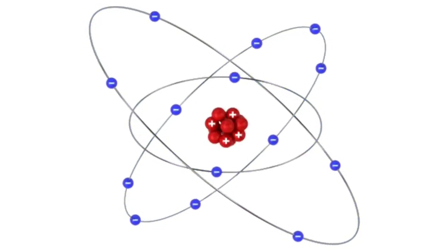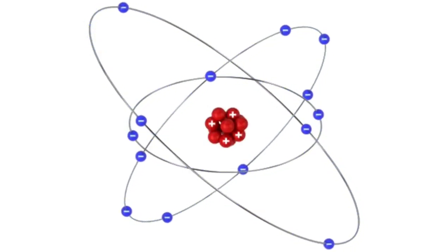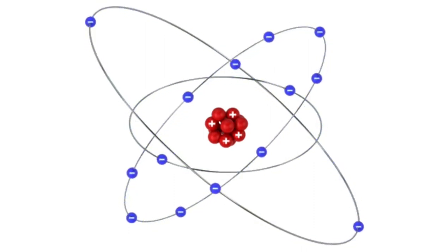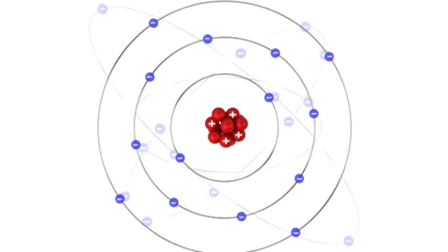Electrons move around a nucleus of an atom in concentric orbits. These orbits or shells represent different energy states that electrons can exhibit. The farther an electron is from the nucleus, the greater its potential energy.